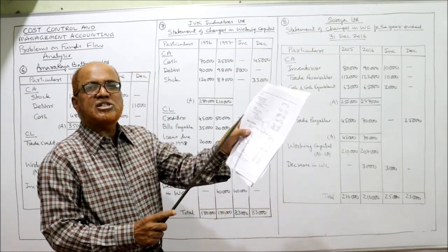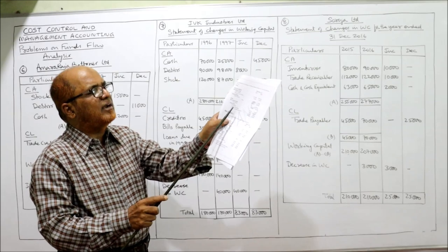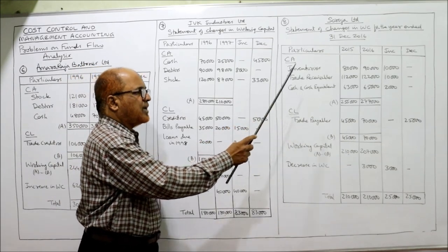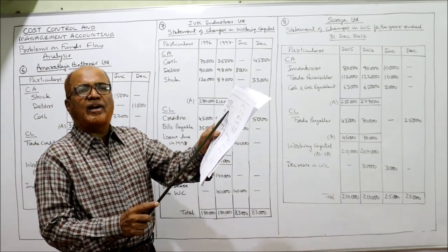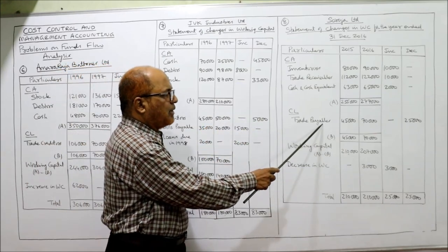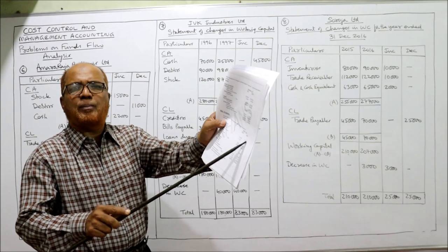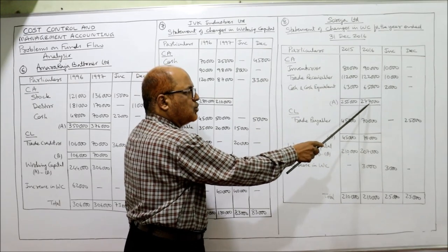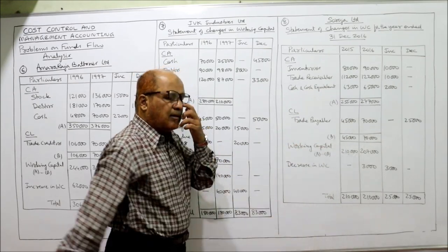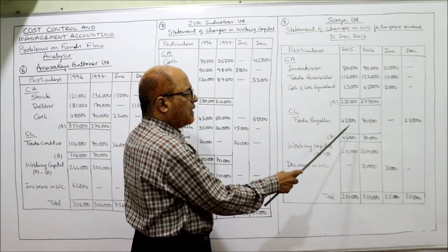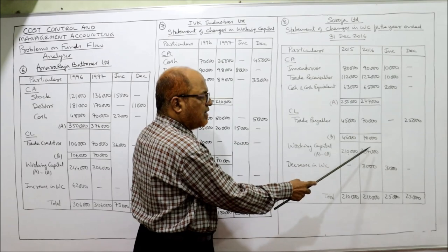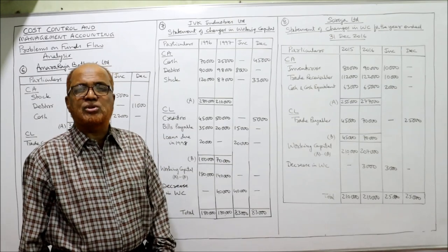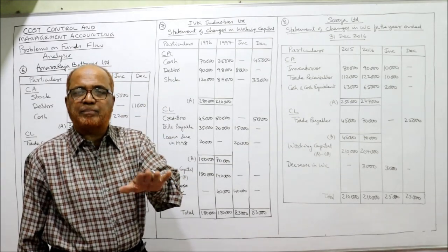In this problem, current assets are specifically given: inventories, trade receivable, and cash and cash equivalents. Current liability has only one item: trade payable. Taking the values from the problem: total current assets are 2,55,000 last year and 2,77,000 current year. Current liability: 45,000 and 70,000. Working capital: 2,55,000 minus 45,000 equals 2,10,000; current year 2,77,000 minus 70,000 equals 2,07,000. There is a decrease in working capital by 3,000.